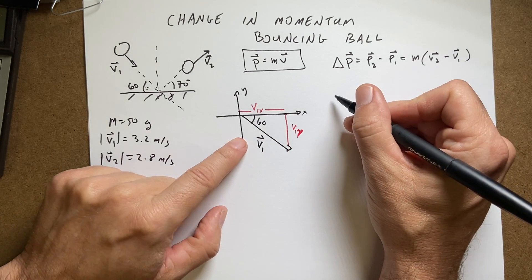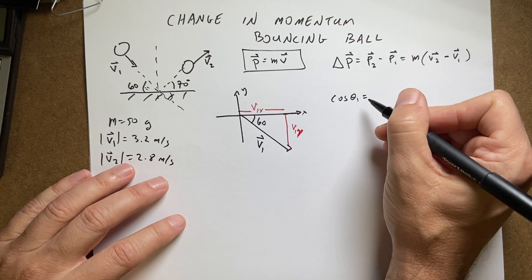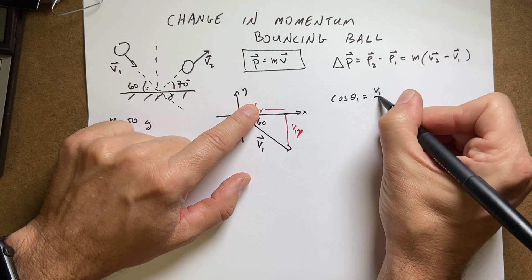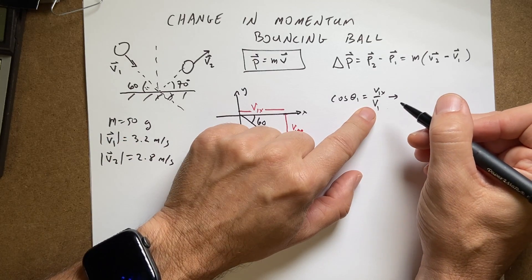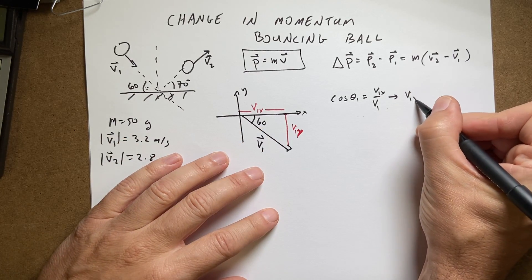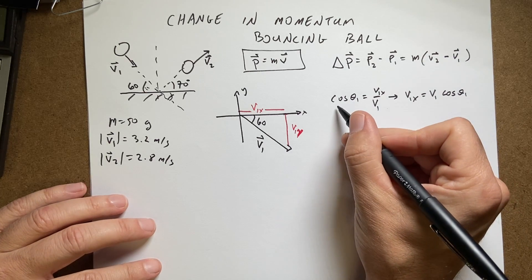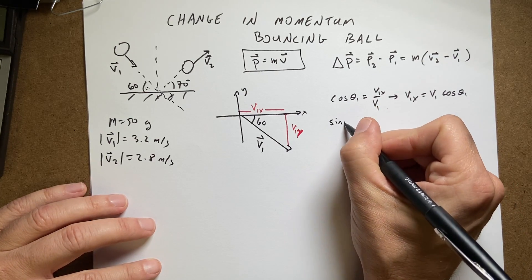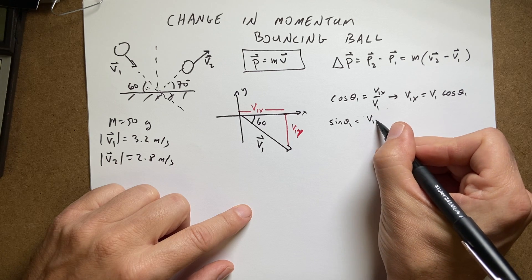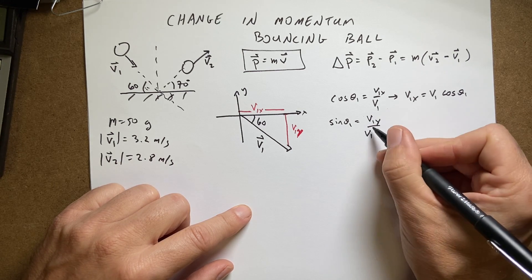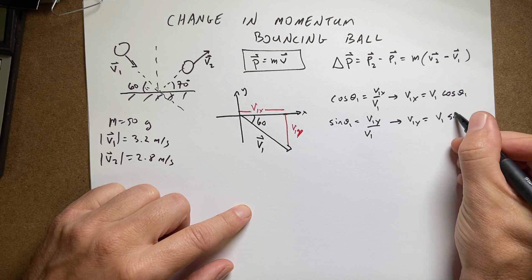So let's start off by saying what if I take the cosine of theta1. Cosine is defined as adjacent over hypotenuse. So that would be v1x over the hypotenuse of v1. And I can use this to solve for, I can multiply both sides by v1 and I get v1x equals v1 cosine theta1. And I'm not going to put in the numbers, I'll put in the numbers at the end. Next I can do the same thing with sine of theta1. Sine of theta1 is opposite over hypotenuse. So that's going to be v1y over v1. I solve for v1y and I get v1y equals v1 sine theta1.